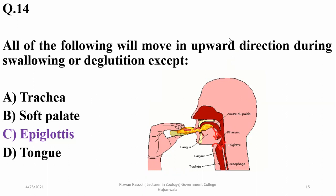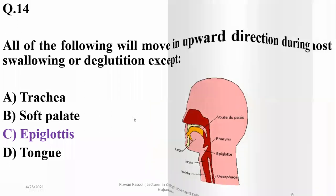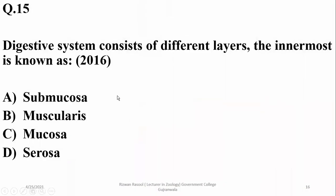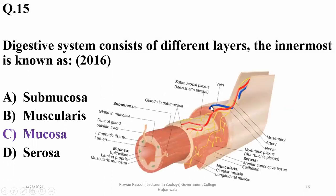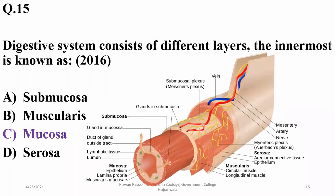The digestive system consists of different layers: the innermost is known as the mucosa and the outermost is the serosa, while the muscularis is the middle layer and the submucosa lies outer to the mucosa and inner to the muscularis.